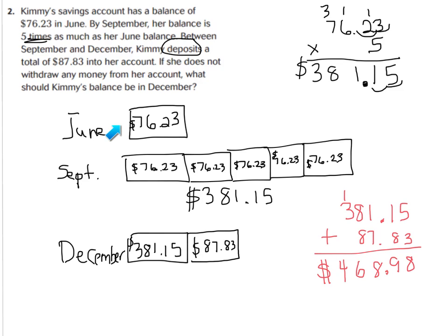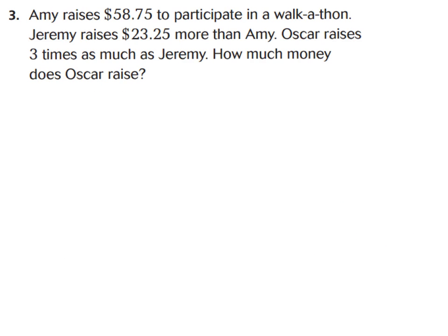This is how you draw a diagram — our essential question strategy — to solve a math word problem. Let's look at question three. It says Amy raises $58.75 to participate in a walk-a-thon. Jeremy raises $23.25 more than Amy. Oscar raises three times as much money as Jeremy. How much money does Oscar raise? We have to find what Jeremy raised first in order to figure out Oscar. Let's start with Amy — she raised $58.75. Make one box and write $58.75 to show Amy's total.